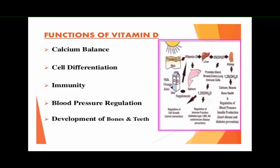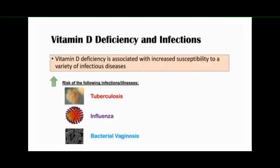Vitamin D has its own activity in enhancing the immune response to several infectious diseases. It also regulates blood pressure and is involved in the development of both bones and teeth. Low levels of vitamin D have been associated with increased susceptibility to infection, disease, and immune-related disorders.